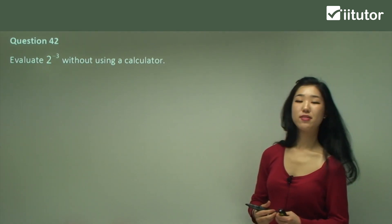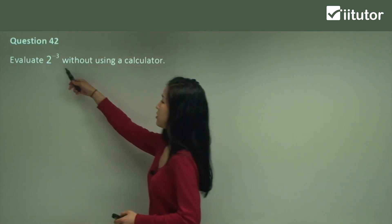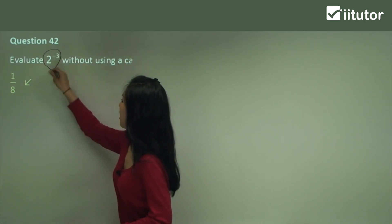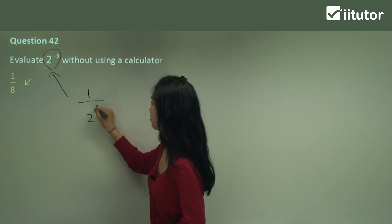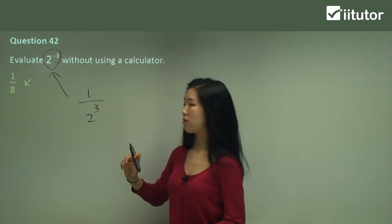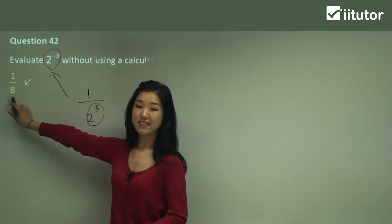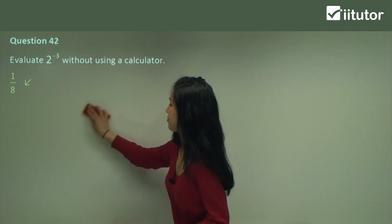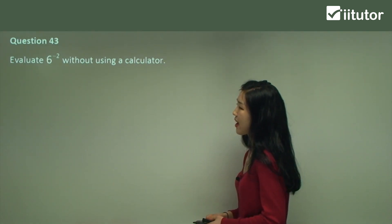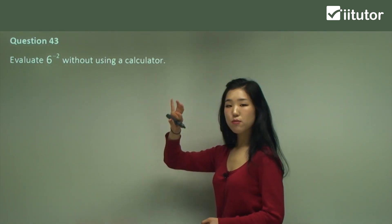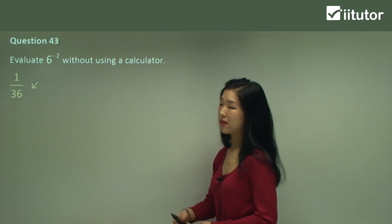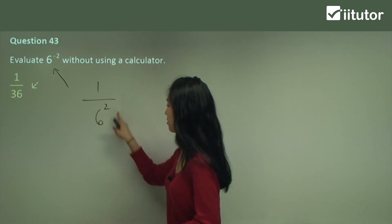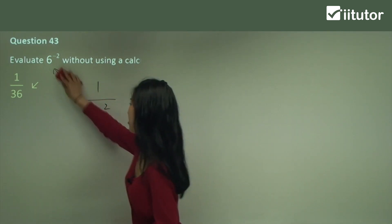Question 42 — evaluate without using a calculator. See how this is a negative index, so I must move it down to the denominator and make it into a positive index. Positive 3 — and you should know that 2 cubed is 8. So all I'm doing is making it 1 over 8. It's very, very simple; you don't need a calculator for this. Question 43 — again, without using a calculator. It's 6 to the power of negative 2. Move it down to the denominator and it becomes 1 over 36, because 6 squared is simply 36.